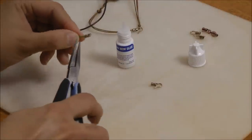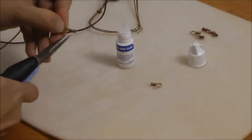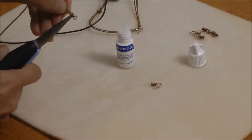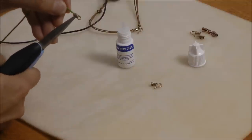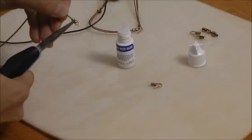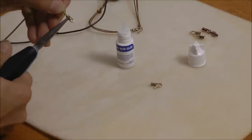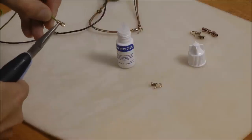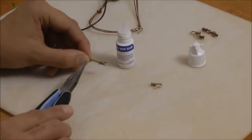I simply take my chain nose pliers and I place them on that center flat section of the clasp and I squeeze it. Next I'm going to turn it around completely and squeeze that other side just to make sure that flat part is crimped on both sides.